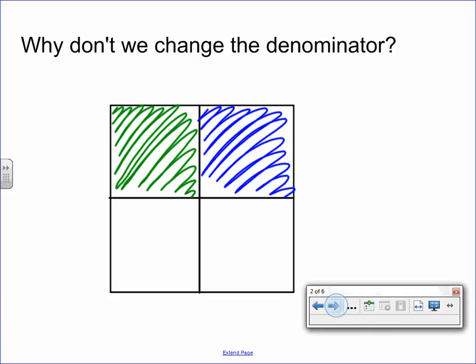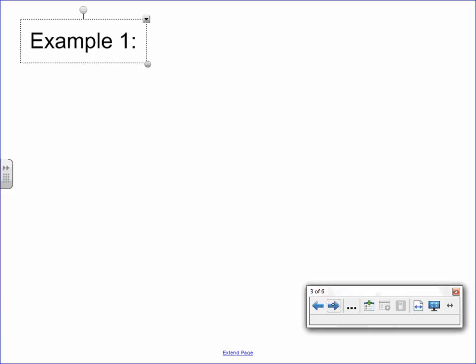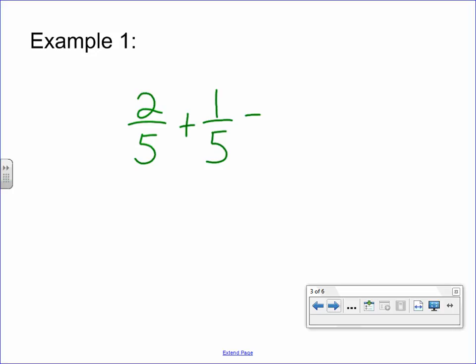Here's another example of adding fractions with like denominators. Let's say 2 fifths plus 1 fifth. Now, 2 plus 1 is 3, my denominator, we don't add, we actually just leave it the same, and my answer is 3 fifths. The last thing I need to make sure I do whenever I do this is say, do I need to simplify? And in this case, 3 and 5 do not need to be simplified.